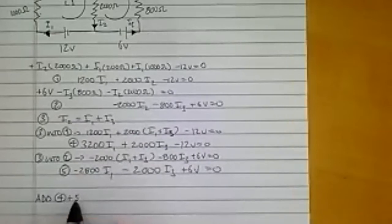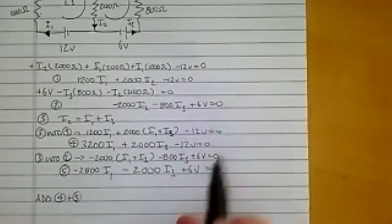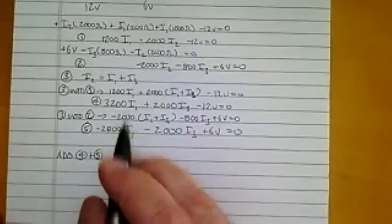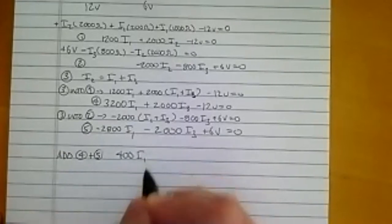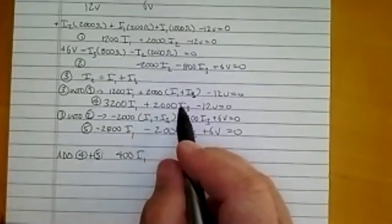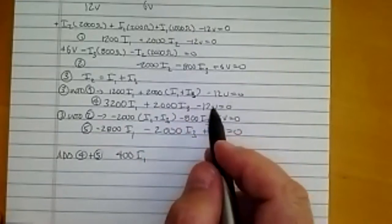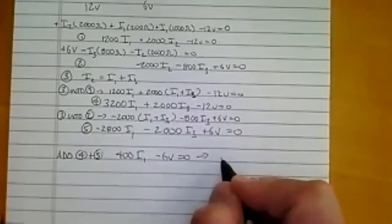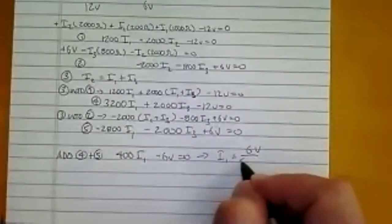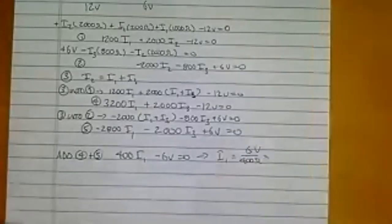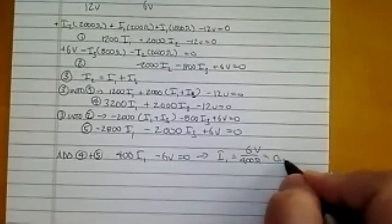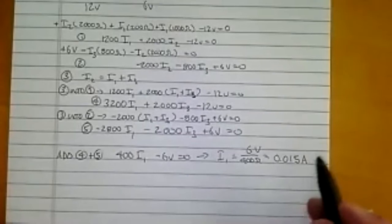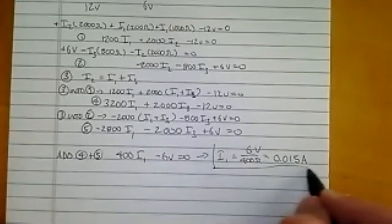So I'm going to add equation four and five. I don't have to multiply them by any constants because the coefficients are already equal but opposite. So when I add 3200 I1 and negative 2800 I1 I'll get a positive 400, so I get 400 I1, that number happens to be ohms by the way. When I add 2000 I3 to negative 2000 I3 I get zero, but when I add negative 12 volts to 6 volts I get negative 6 volts equals zero. That gives me I1 is actually equal to 6 volts over 400 ohms, and when I divide 6 volts by 400 I get 0.015 amps. So I1 is evidently chosen correctly as far as the direction, the value came out positive.